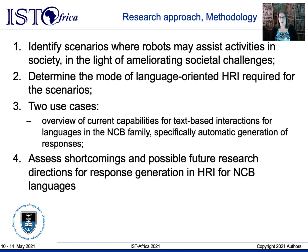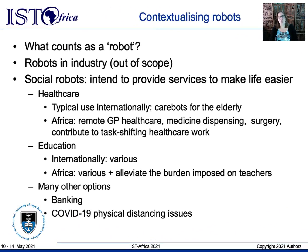To meet that objective, I first contextualized robots and determined the respective human-robot interaction modes. Two use cases were selected and assessed in detail on current capabilities and needs, so as to extract requirements that will help plan a path forward. Social robots intend to provide services that make life easier. Sample scenarios identified for healthcare include remote primary healthcare to alleviate the low patient-doctor ratio and language mismatch between doctor and patient. For education, tasks include exercises and homework assistance, but also alleviating the burden on teachers in classes of 50 to 100 learners.